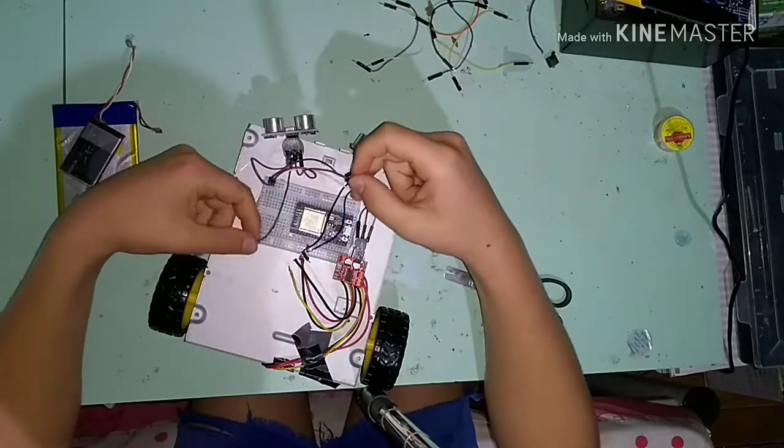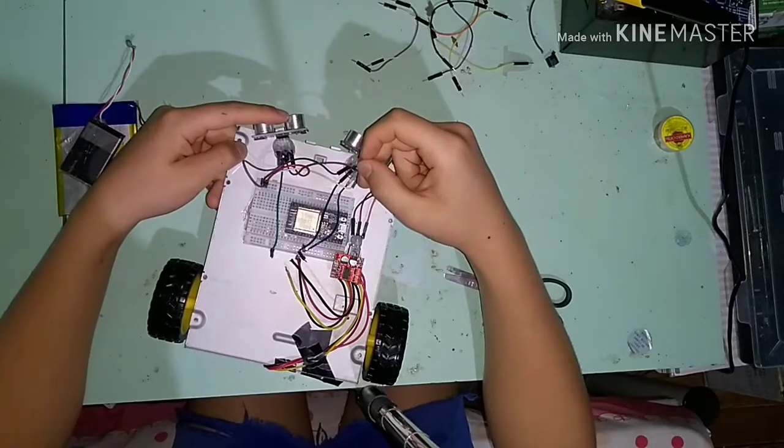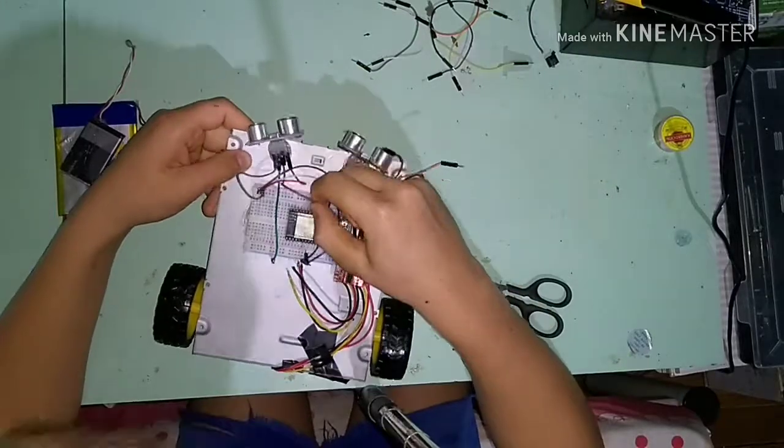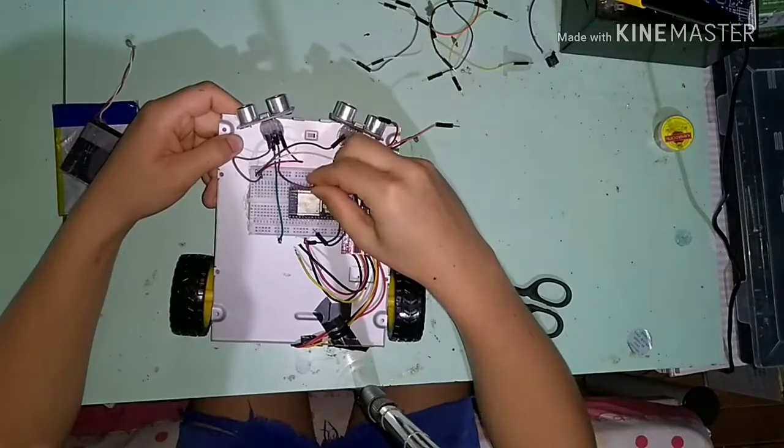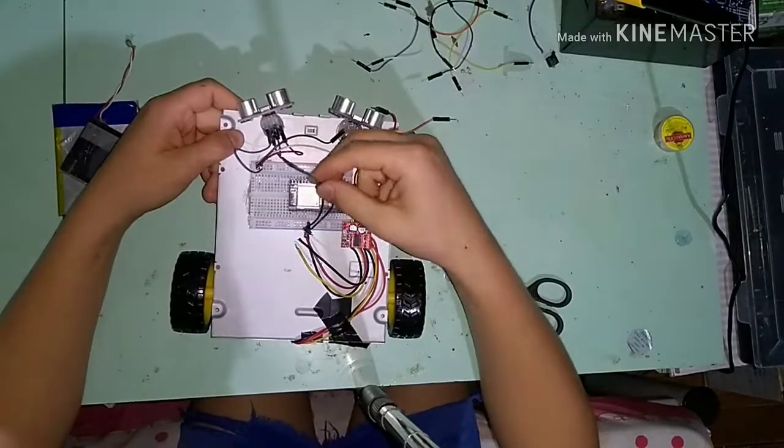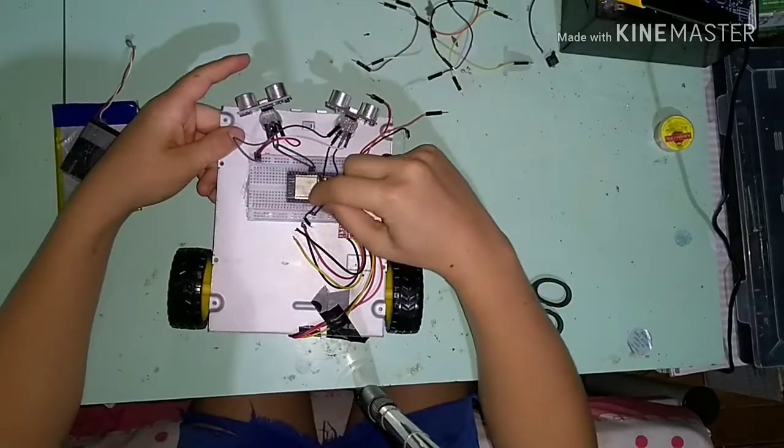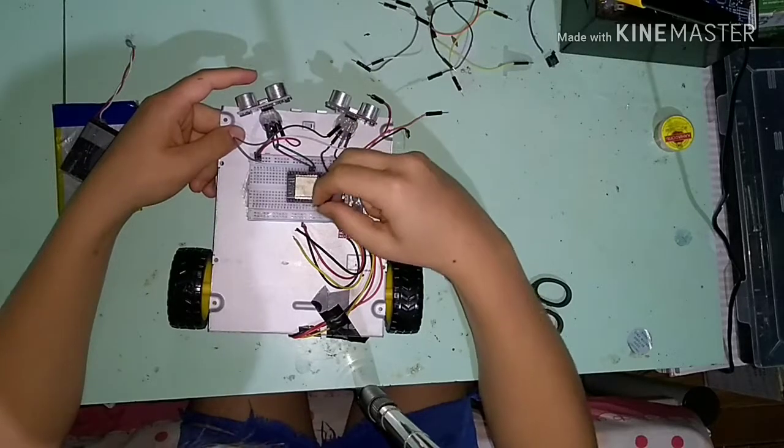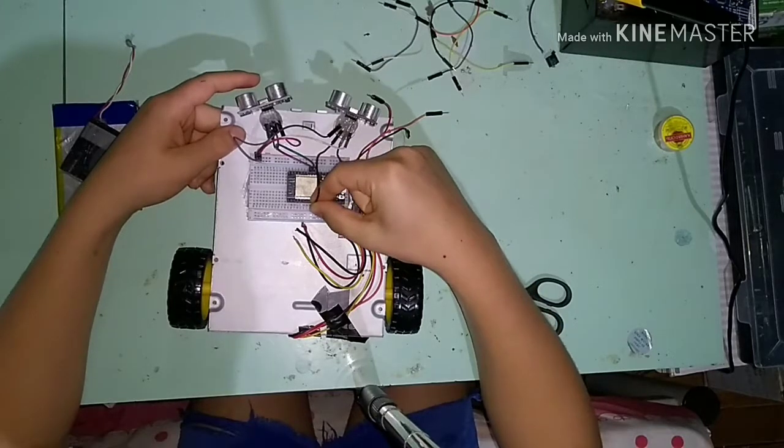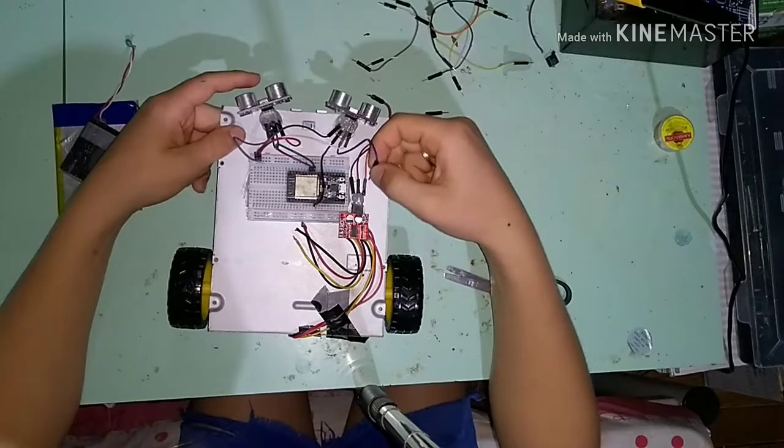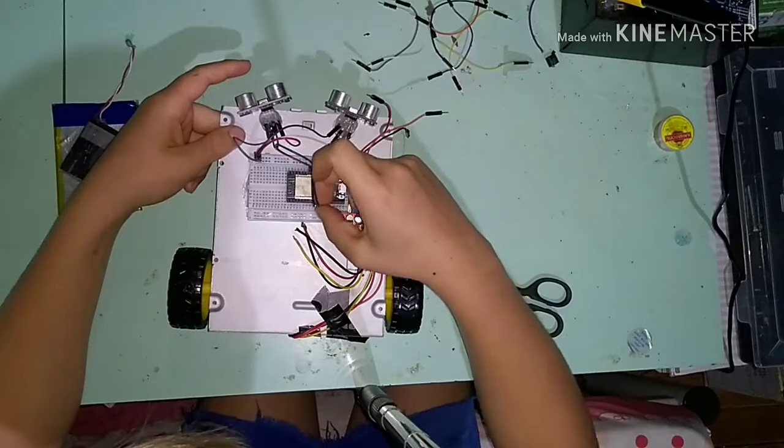Agora peguemos o trig do primeiro sensor e liguemos ele no pino 19 do ESP32, e o echo no pino 18. Do segundo sensor, liguemos o trig no pino 27 e o echo no pino 26.